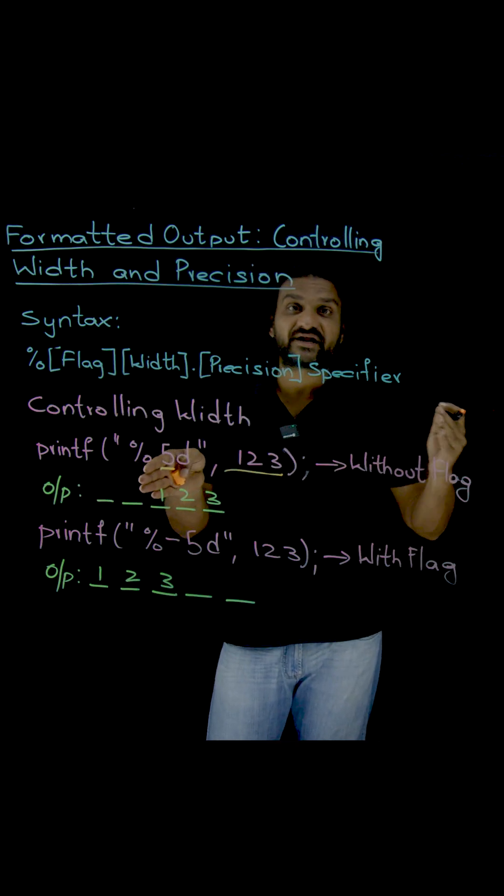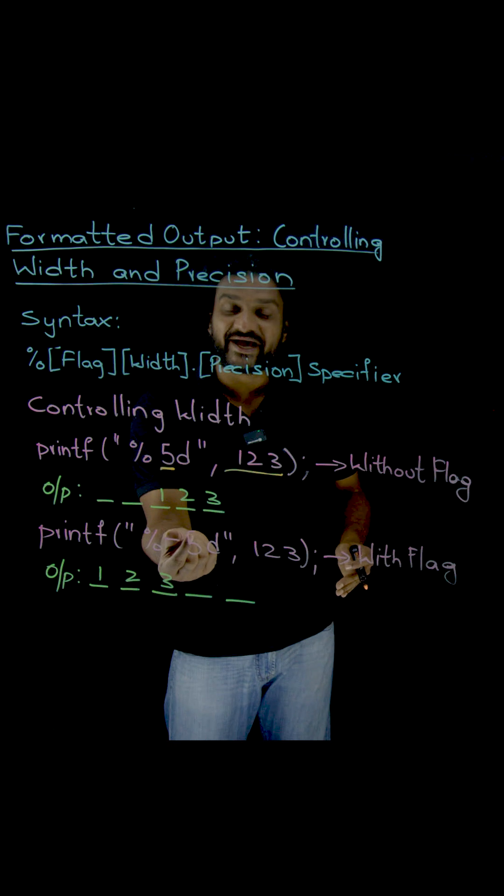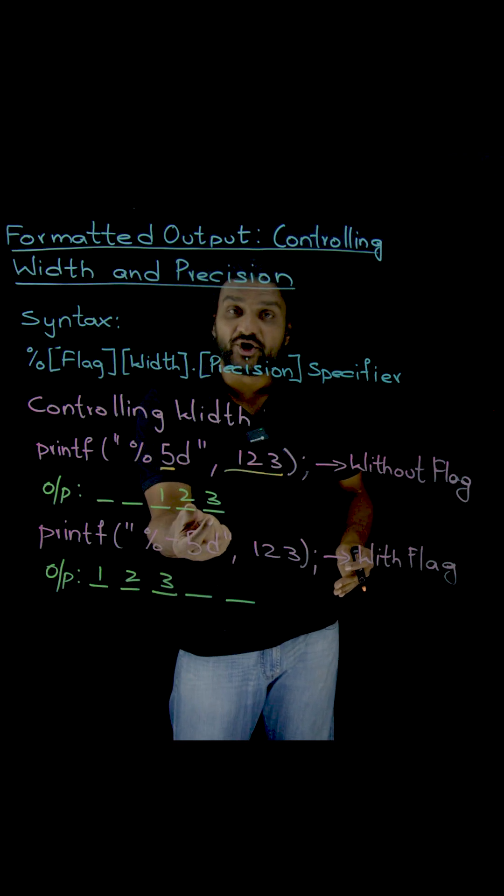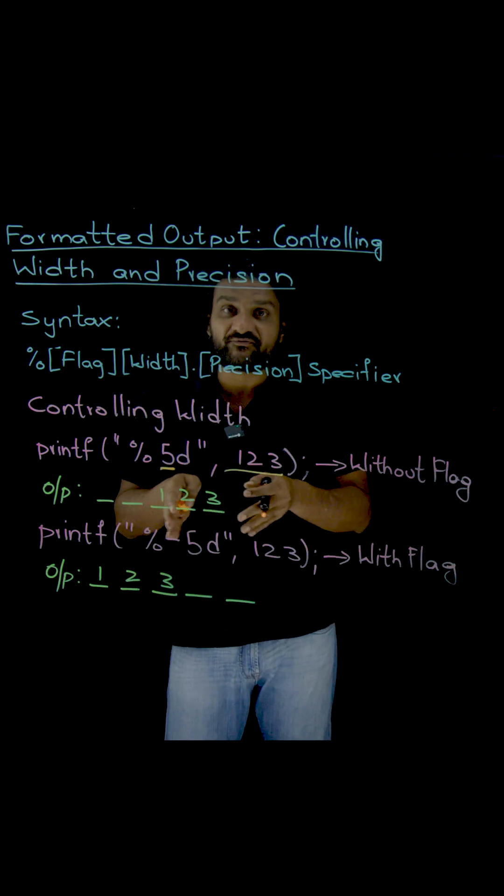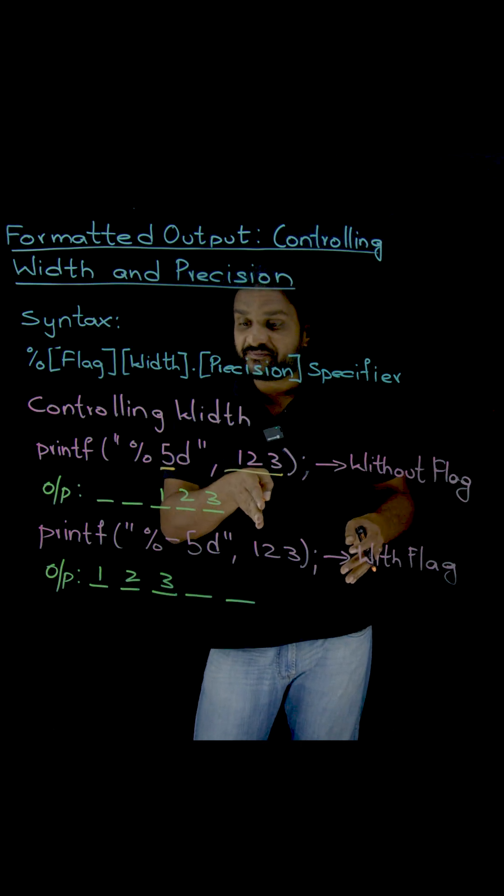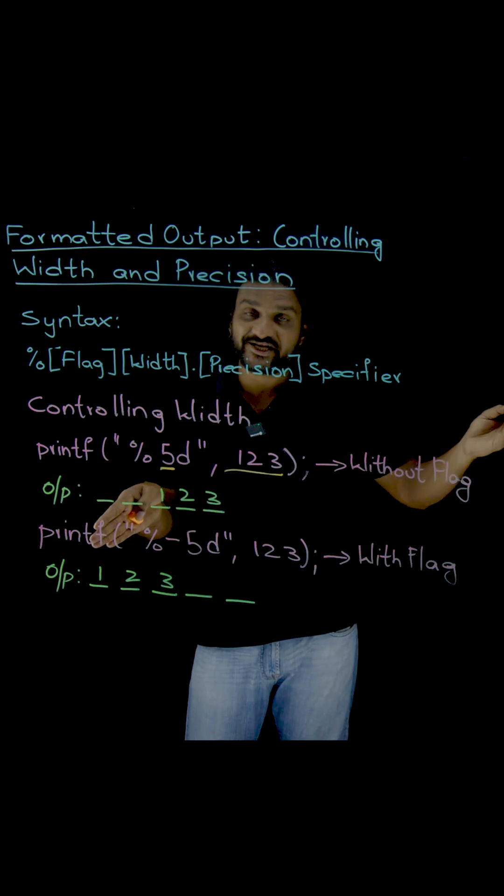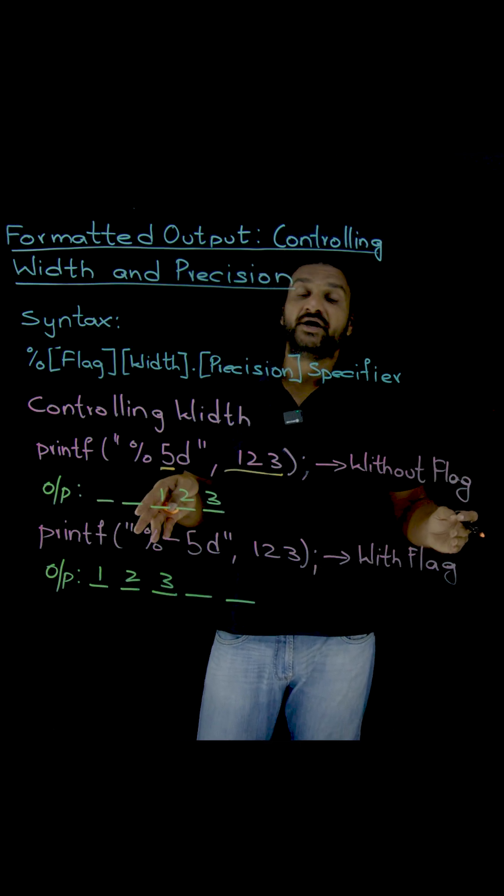By default, it is right aligned. Whenever we use minus 5, a minimum of 5 spaces will get allocated, and it will be left aligned. Previously, it is right aligned.